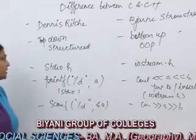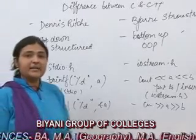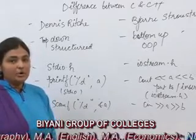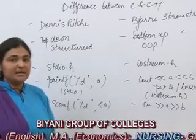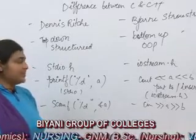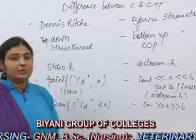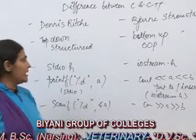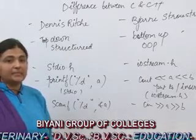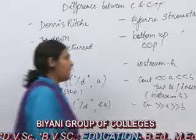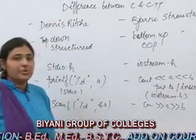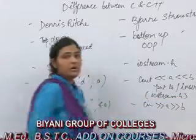The fourth difference we can find is in the printf statement. In C, when we want to display some message on the screen, we use the printf statement, which is defined in the stdio.h header file. Whereas in C++, to display a message on the screen, we use the cout statement. In cout we have the bitwise left shift operator, which can be used in a cascading manner, and it is also known as the put-to operator or insertion operator.